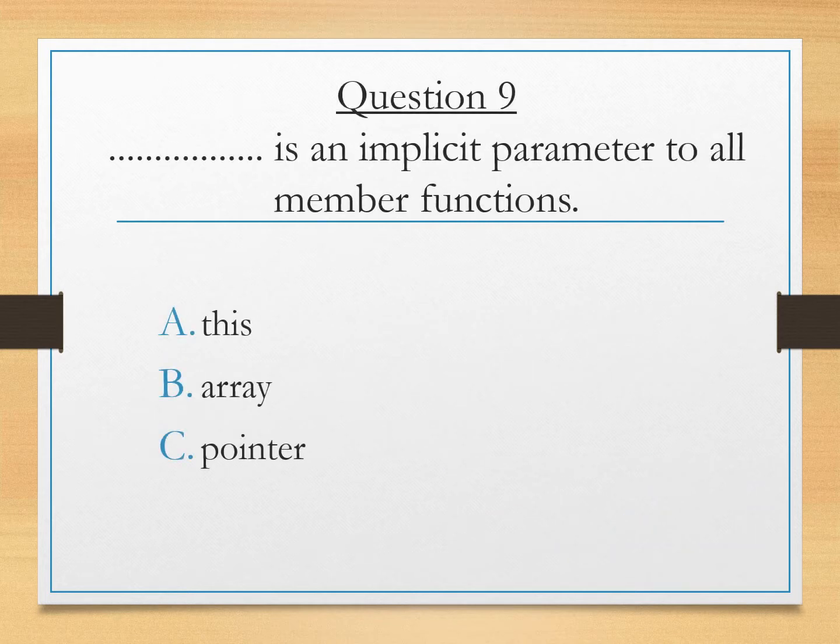Dash is an implicit parameter to all member functions this array or pointer. This is a pointer which is passed to all the member functions of a particular class right so answer will be A this.